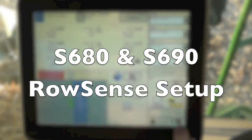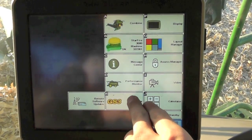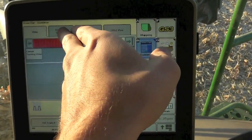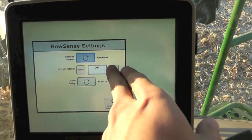To get to our row sense settings, we'll start from our home page, go to menu, GS3, go to our guidance icon, guidance settings tab, down here to row sense settings.